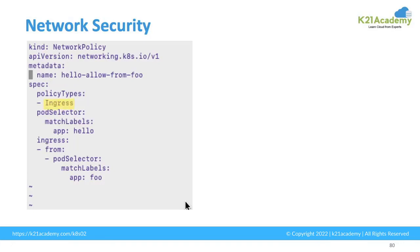In an ingress policy, you can specify conditions. Here the condition says we are selecting the pod labeled as app:hello — so this policy is applicable to pods labeled app:hello. The ingress policy specifies that traffic is allowed from pods labeled app:foo. So pods labeled app:foo can only send traffic to pods labeled app:hello, and app:hello will not accept traffic from any other pod.